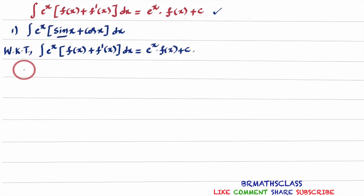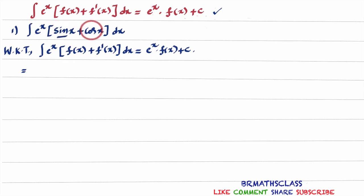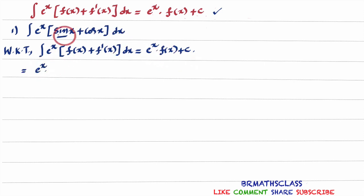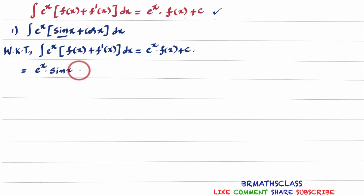So after writing this step, I will write the answer directly. Here, f(x) is sinx, and the derivative of sinx is cosx. This integral is of this form, so we write the answer directly. The answer is eˣ into f(x), where f(x) is sinx. So the answer is eˣ into sinx plus c.